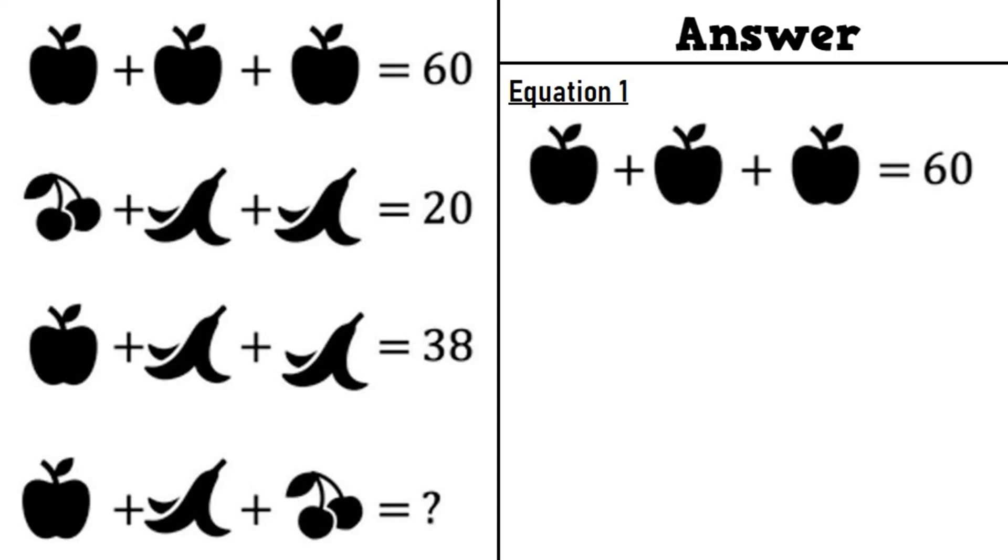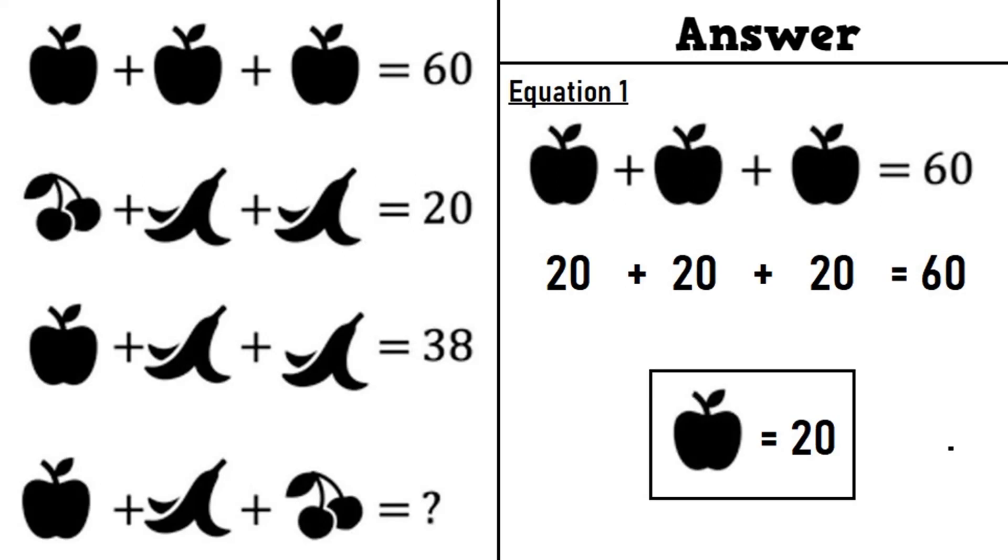Let's check equation number 1 which says an apple plus an apple plus an apple is equal to 60. 20 plus 20 plus 20 is equal to 60. An apple is equal to 20.